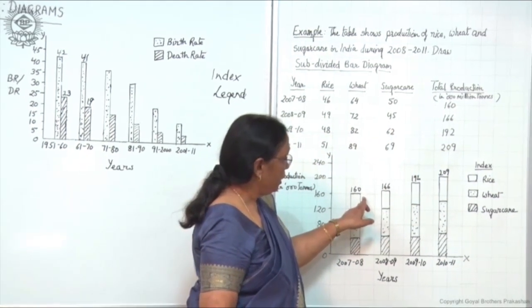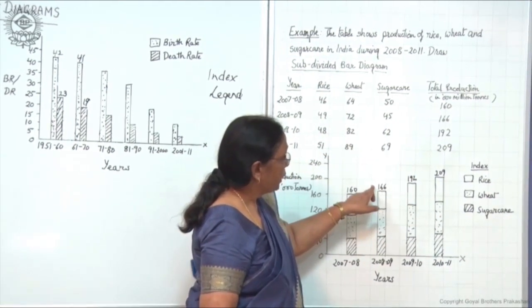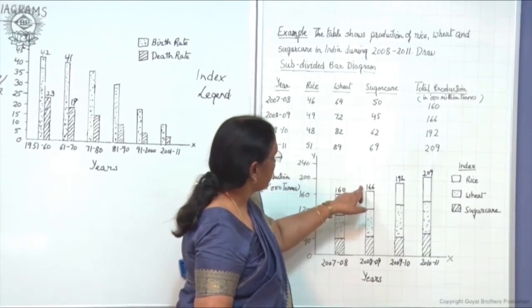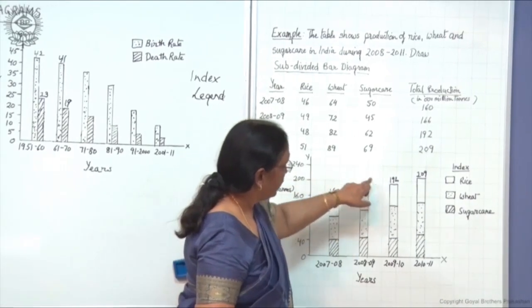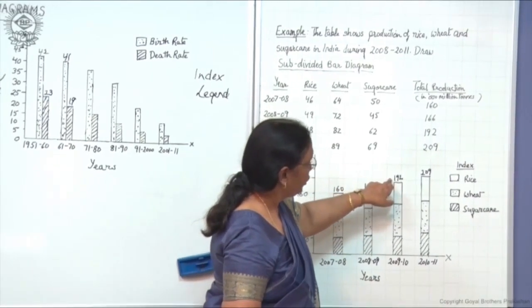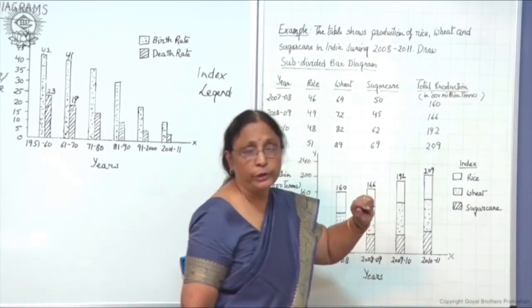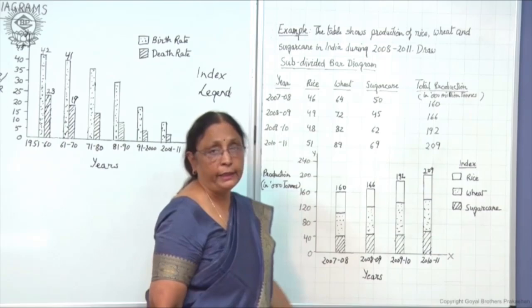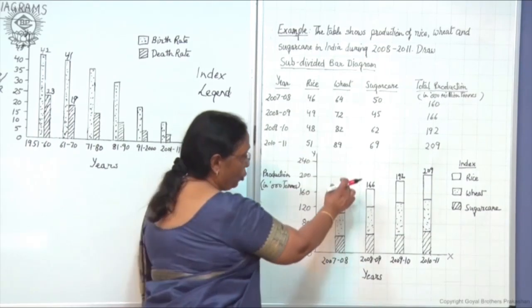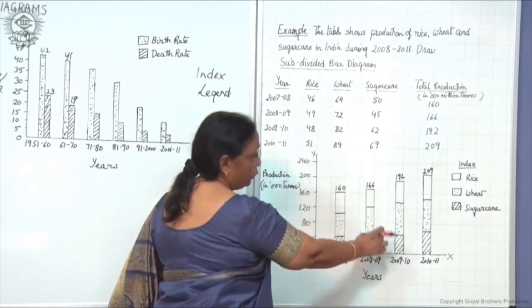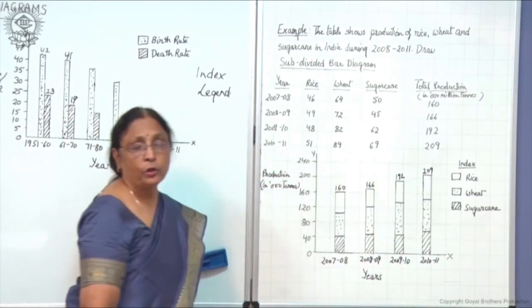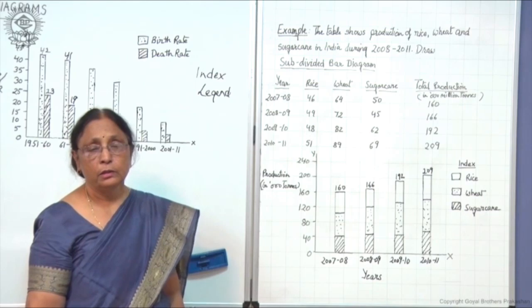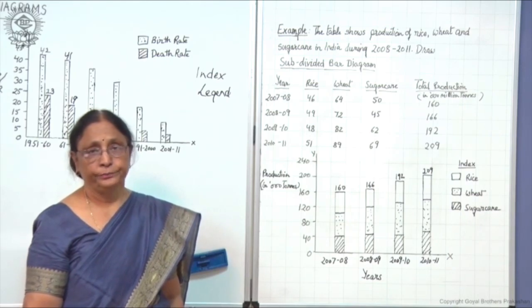So 160 for the first year, second is 166, third year it was 192, fourth year 209. The total length of each bar will be according to this total production figure.